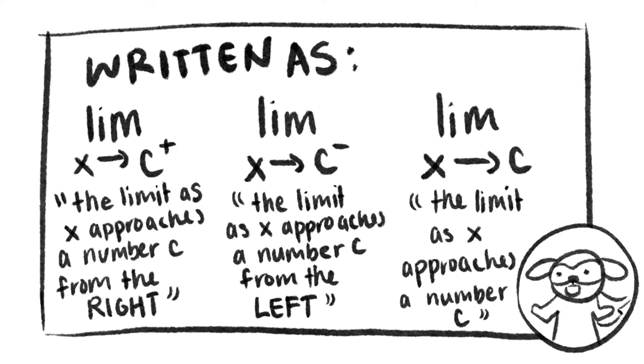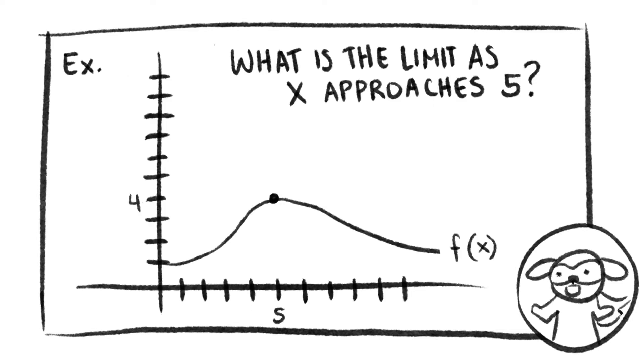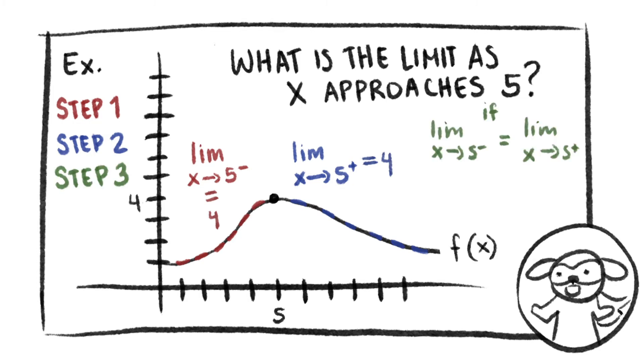We'll look at some examples. What is the limit as x approaches 5? First, find the limit from the left. It's 4. Now find the limit from the right. It's 4. If the limit from the left and the limit from the right are equal, which they are, then the limit as x approaches 5 is 4.